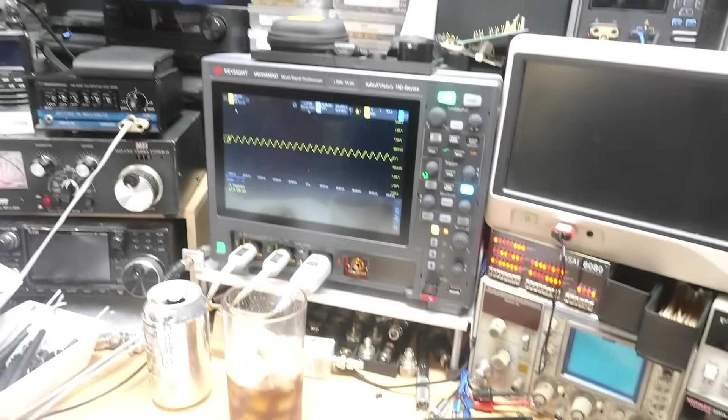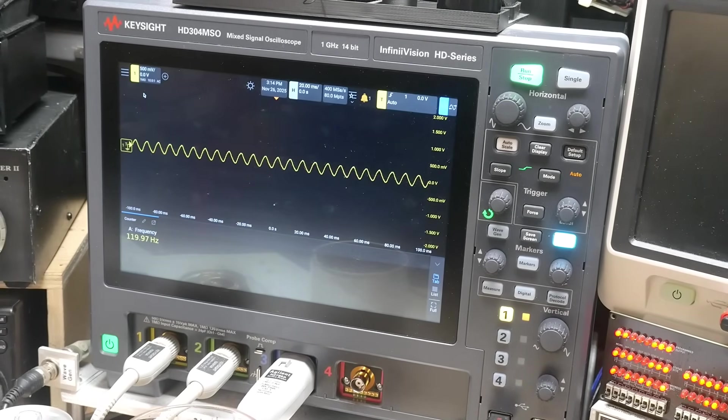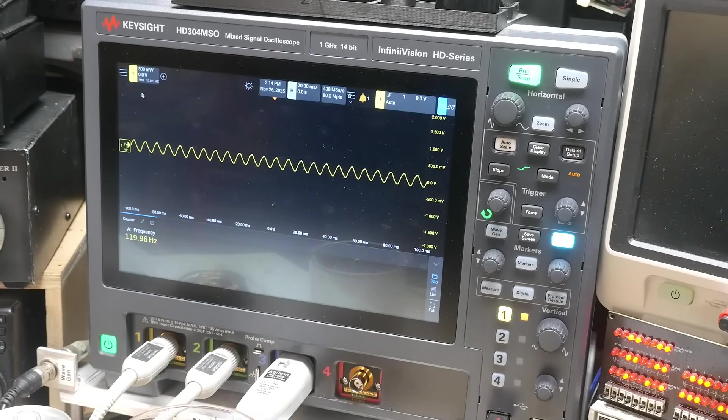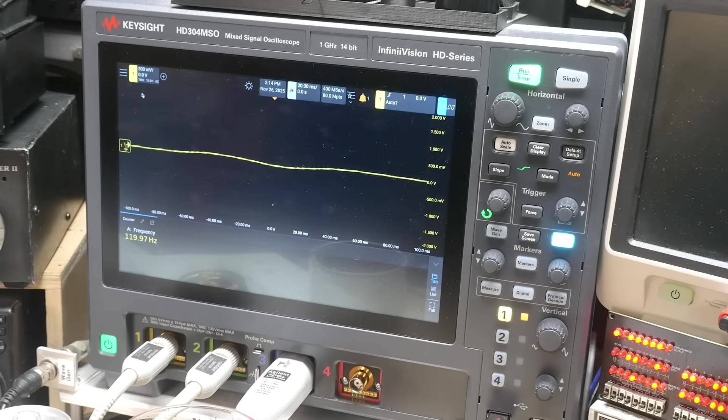So it's picking up room light, and this is the room light being amplified. That's a 120 Hz signal from my LED lights in the garage. But if I put my hand over it, it goes quiet.